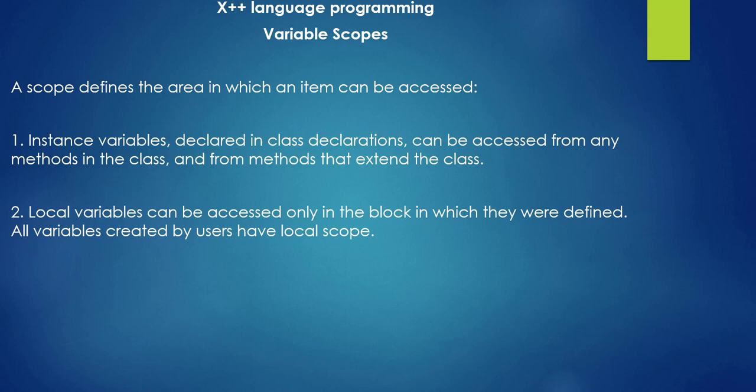Whenever we create certain items or declare a variable, scope determines from where we can access it. The first type is an instance variable, declared in a class declaration, which can be accessed from any method in that class.